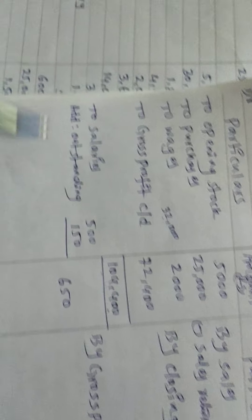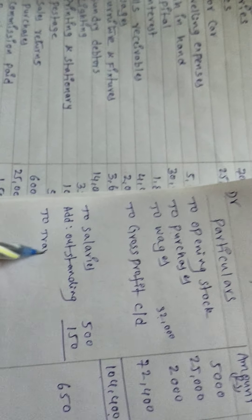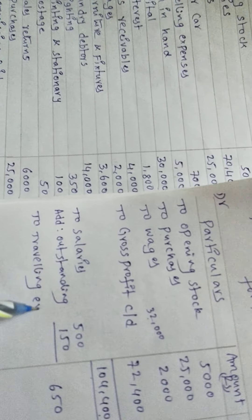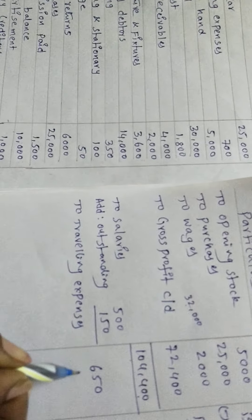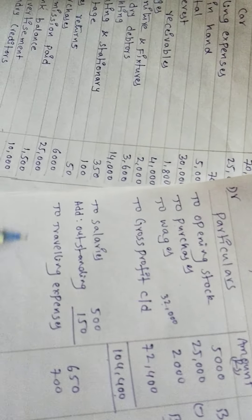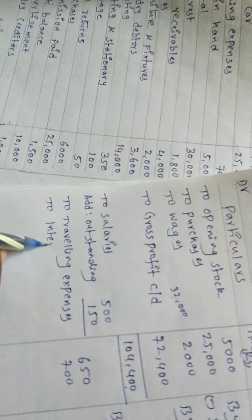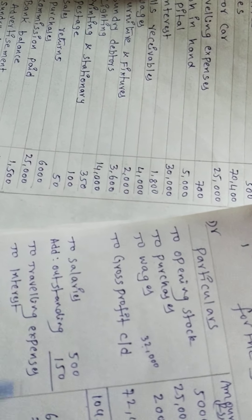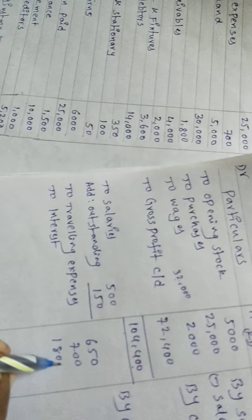Motor car is an asset. Traveling expenses are indirect: 'To traveling expenses' — 700. Cash in hand is an asset. Capital is a liability. Interest is indirect expenditure: 'To interest' — 1,800.